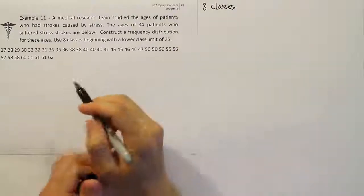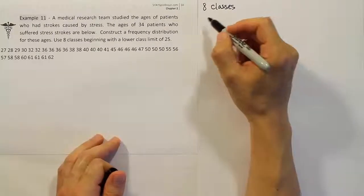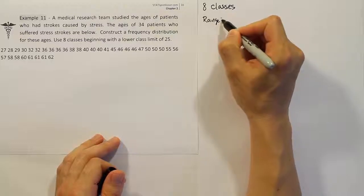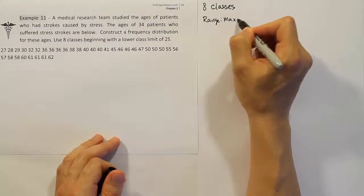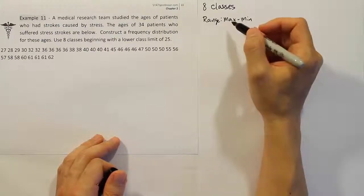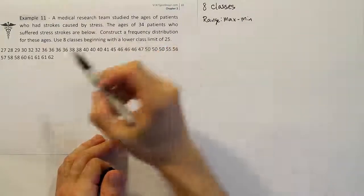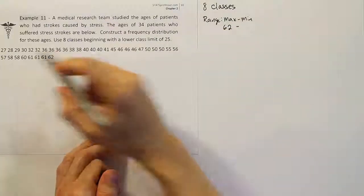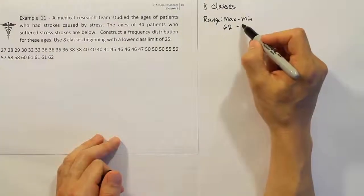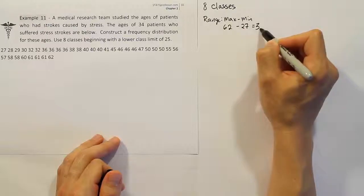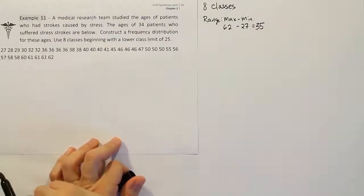Our next step is to determine the range. The range is a very simple formula — it's just the maximum number minus the minimum number in your data set. For us, the range is the maximum value 62 minus the minimum value 27, which gives us 35.